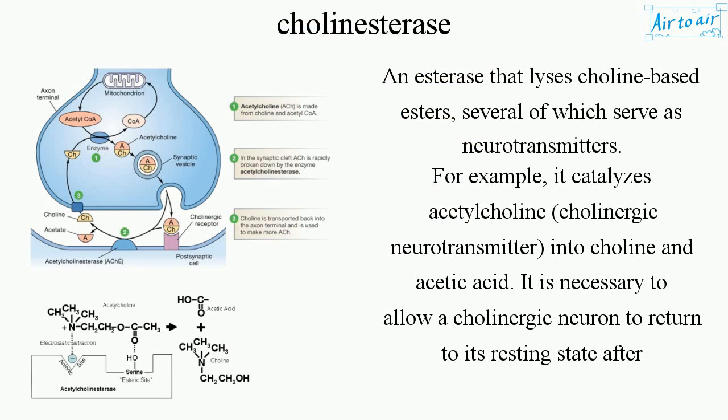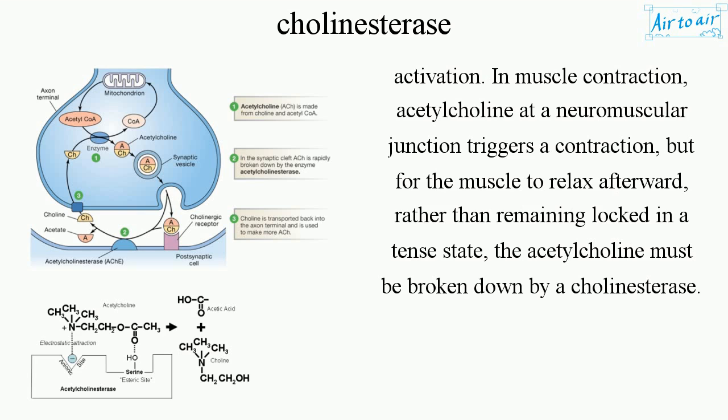For example, it catalyzes acetylcholine, a cholinergic neurotransmitter, into choline and acetic acid. It is necessary to allow a cholinergic neuron to return to its resting state after activation. In muscle contraction, acetylcholine at a neuromuscular junction triggers a contraction, but for the muscle to relax afterward, rather than remaining locked in a tense state, the acetylcholine must be broken down by a cholinesterase.